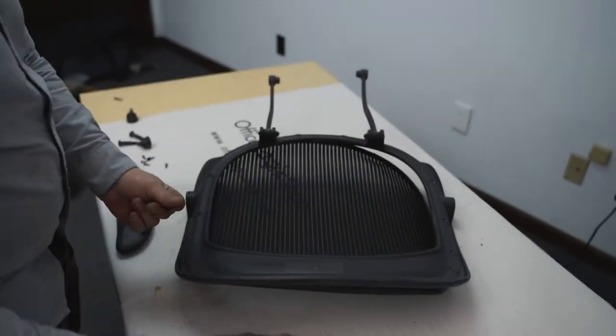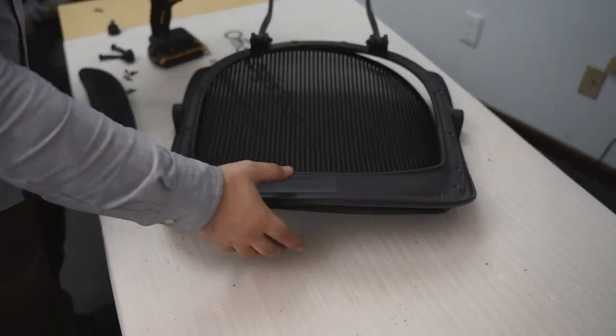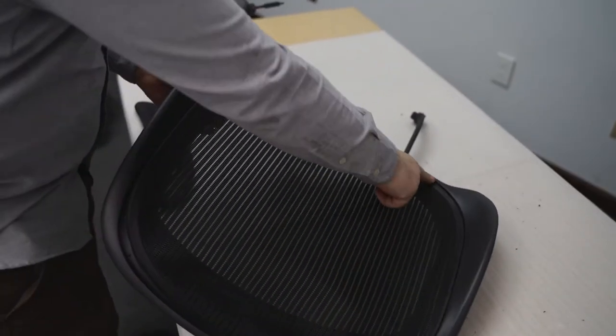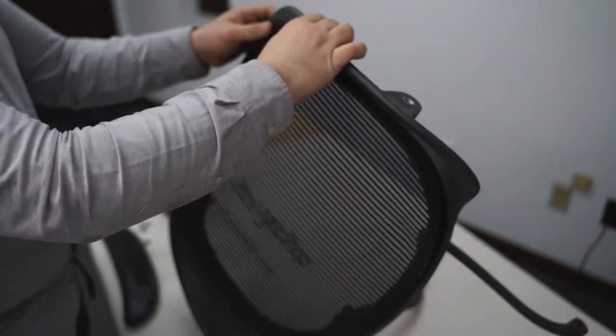Don't worry if the seat mesh doesn't align perfectly without the screws right away. It's easier to screw in the seat mesh one section at a time. As you screw in the bolts, you may need to realign the seat mesh.